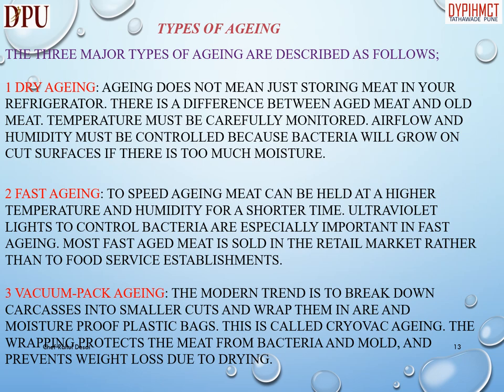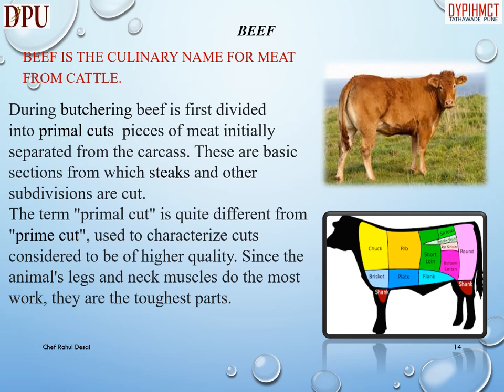Vacuum pack aging: the modern trend is to break down carcasses into smaller cuts and wrap them in airtight, moisture-proof plastic bags. This is called cryovac aging. The wrapping protects the meat from bacteria and mold and prevents weight loss due to drying.